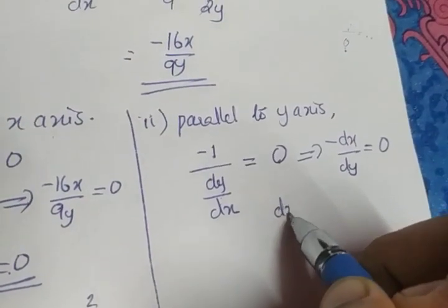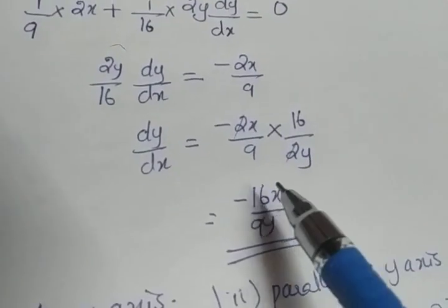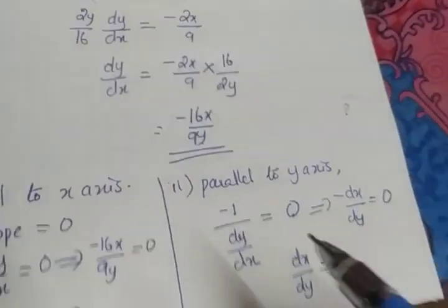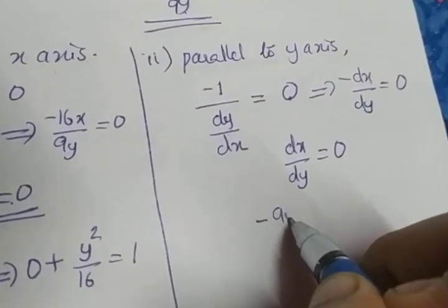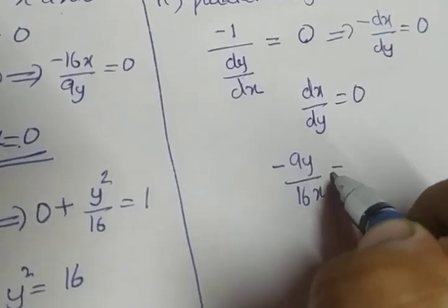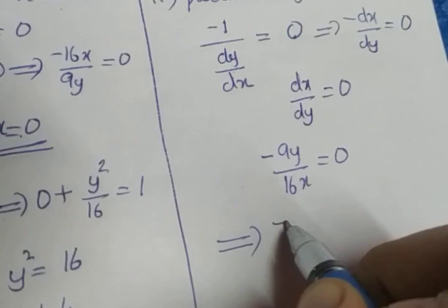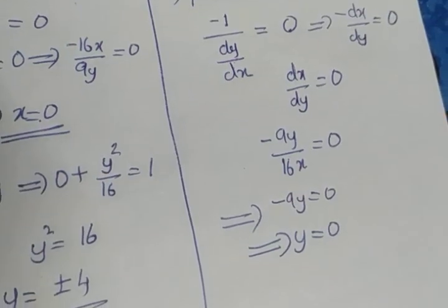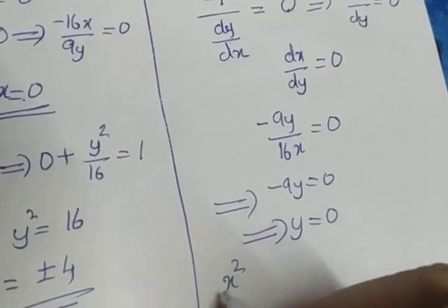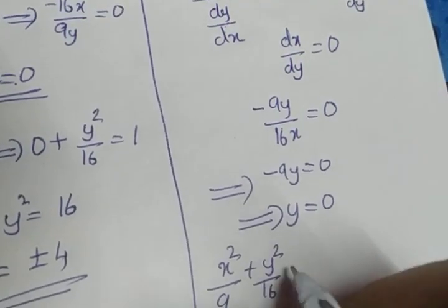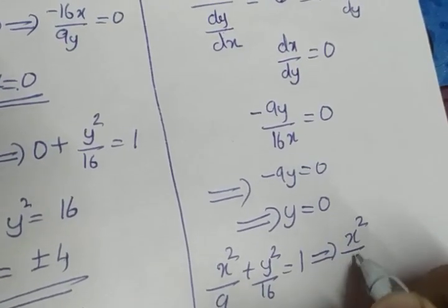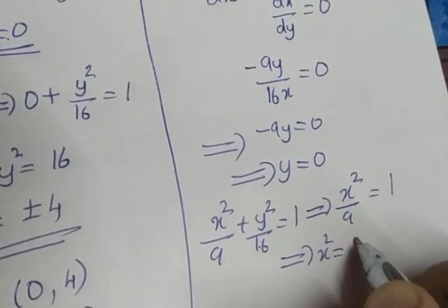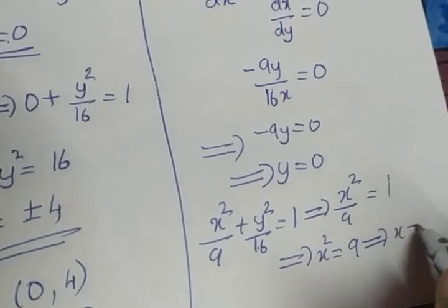So dx/dy = 0. Since dy/dx = −16x/9y, its reciprocal dx/dy = −9y/16x. Setting −9y/16x = 0 and cross-multiplying gives −9y = 0, so y = 0. Substituting y = 0 into x²/9 + y²/16 = 1 gives x²/9 = 1, so x² = 9, and x = ±3.